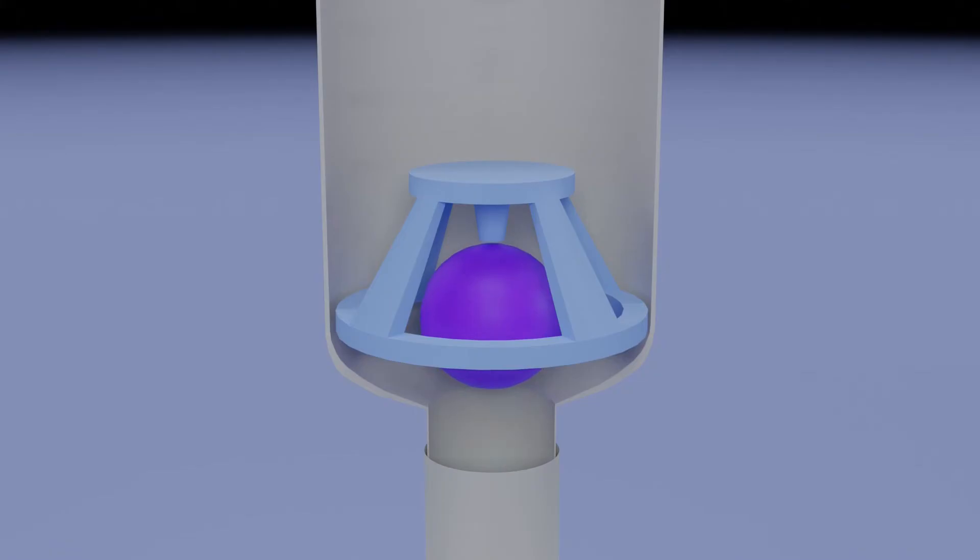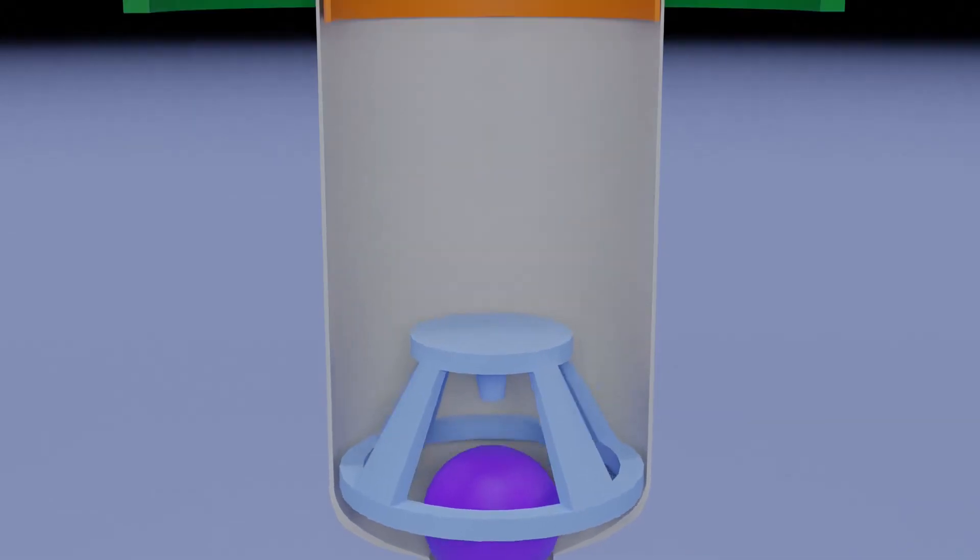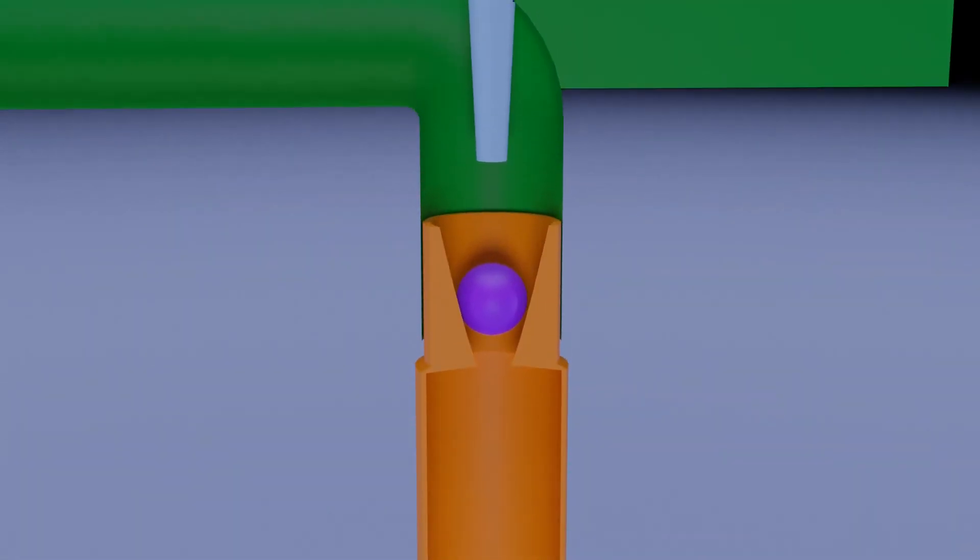When the ball is lifted, the liquid can enter the chamber this way. Similarly, when the upper ball is in rested position, it seals the chamber at the top and prevents the outside air from entering into the chamber.